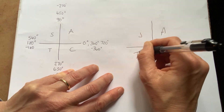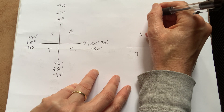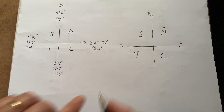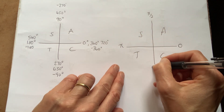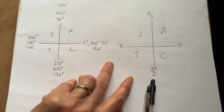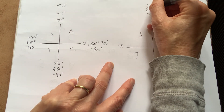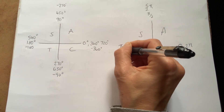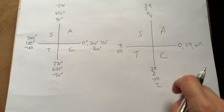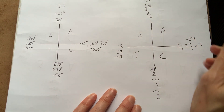Now we're going to do the same CAST diagram but with radians. We start with zero radians and move round anti-clockwise. Instead of 90 degrees we go π/2 radians, then π radians, then 3π/2 — we'd write it as three-halves pi — then 2π, 5π/2, 3π, 7π/2, 4π, and so on. You can also go clockwise in chunks of negative π/2 radians. It works exactly the same as degrees, just in chunks of π/2 rather than 90°.